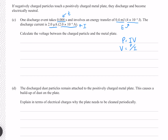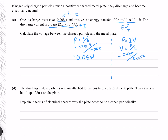We have the current but not the power, so we need to find a way to calculate it. Fortunately, power also equals energy over time, both of which we have. Putting those numbers in gives exactly 0.05 watts. Using that in our voltage equation gives 25,000 volts exactly.